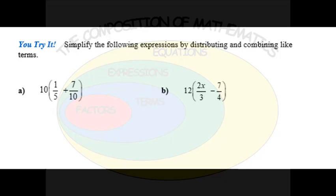Simplify the following expressions by distributing and combining like terms. We have a distribution where inside we have two terms, so we're going to take the 10 and distribute to both terms. When we multiply by fractions we cancel and leave factors that remain. The 10 will cancel with the 5 in the denominator — the 5 cancels leaving a factor of 2 in the numerator, so the term value will be 2.